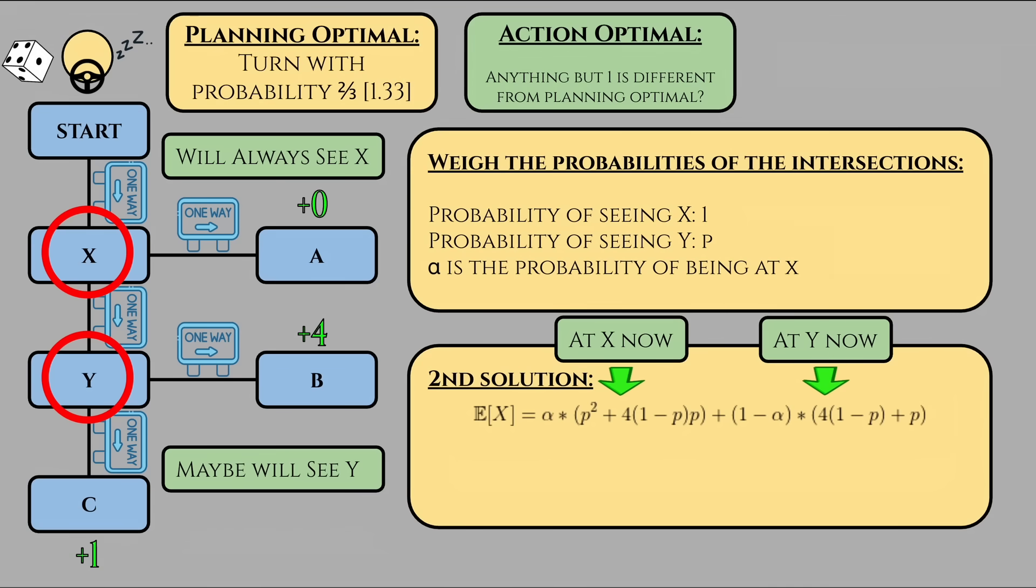As a result, they said that alpha should equal the relative weight of the probabilities, or 1 over 1 plus P. Doing the math, this means E(X) equals 1 over 1 plus P times, in parentheses, 4P minus 3P squared, plus P over 1 plus P times, all in parentheses, 4 minus 3P, which is just equal to 2P times 4 minus 3P all over 1 plus P.